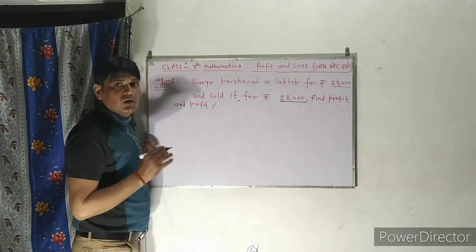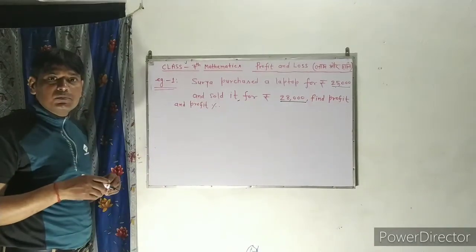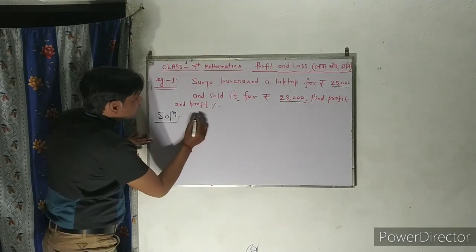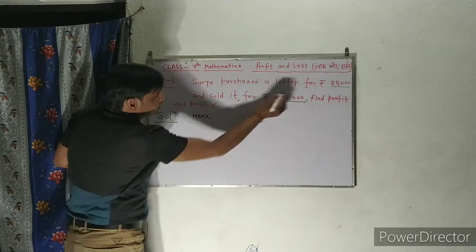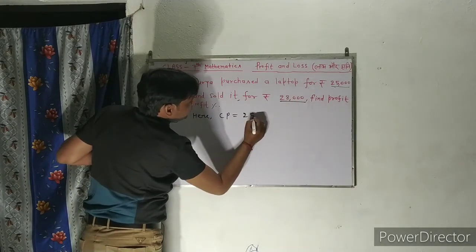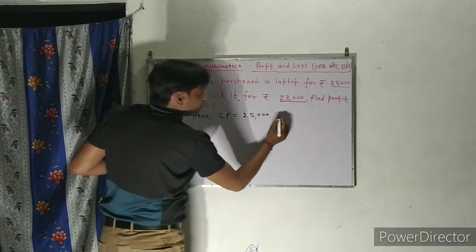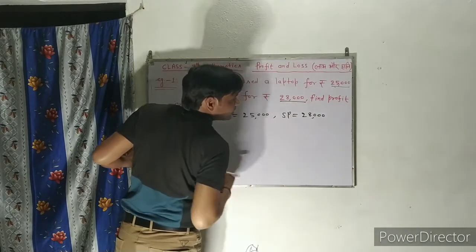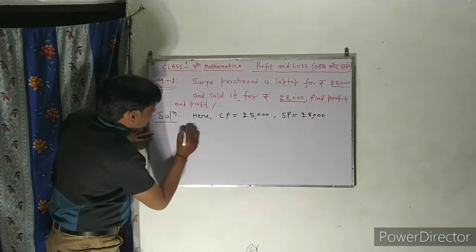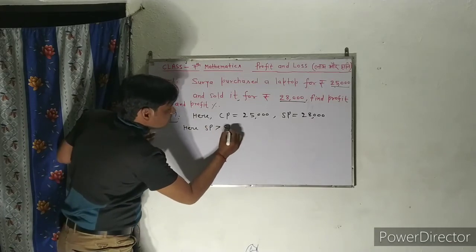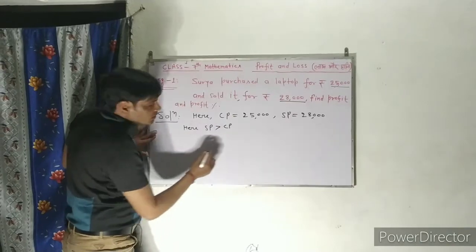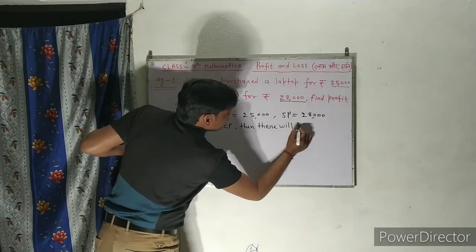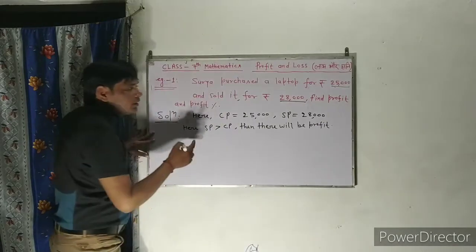क्या निकालना है? Profit और profit percent कितना हो रहा है? तो solution देखिए. यहाँ पर CP क्या है? Cost price 25,000. और SP क्या है? Selling price 28,000. तो here SP is greater than CP — selling price बड़ा है cost price से — then there will be profit.